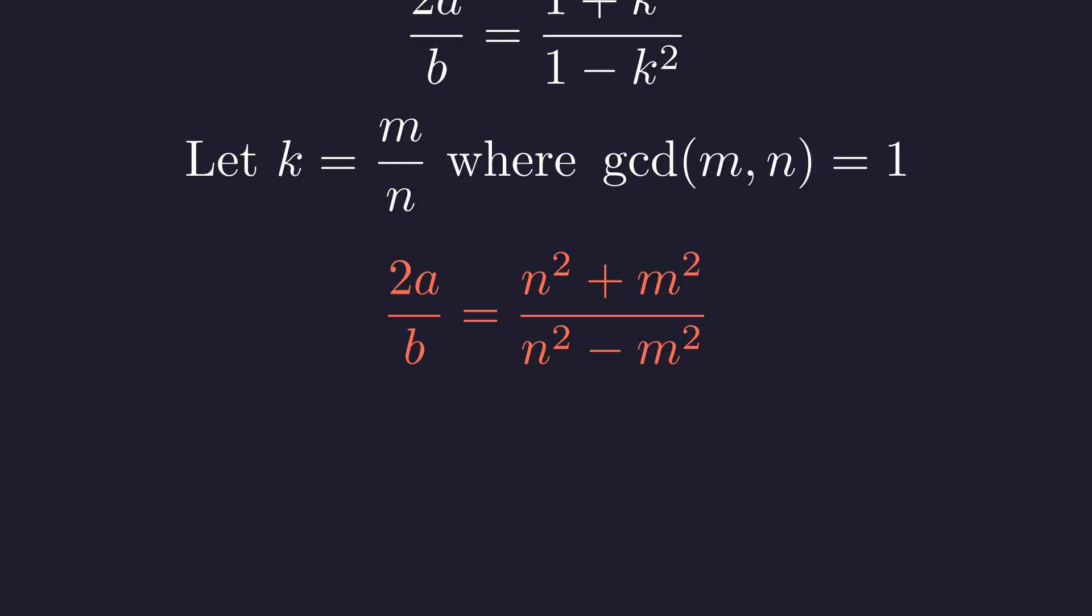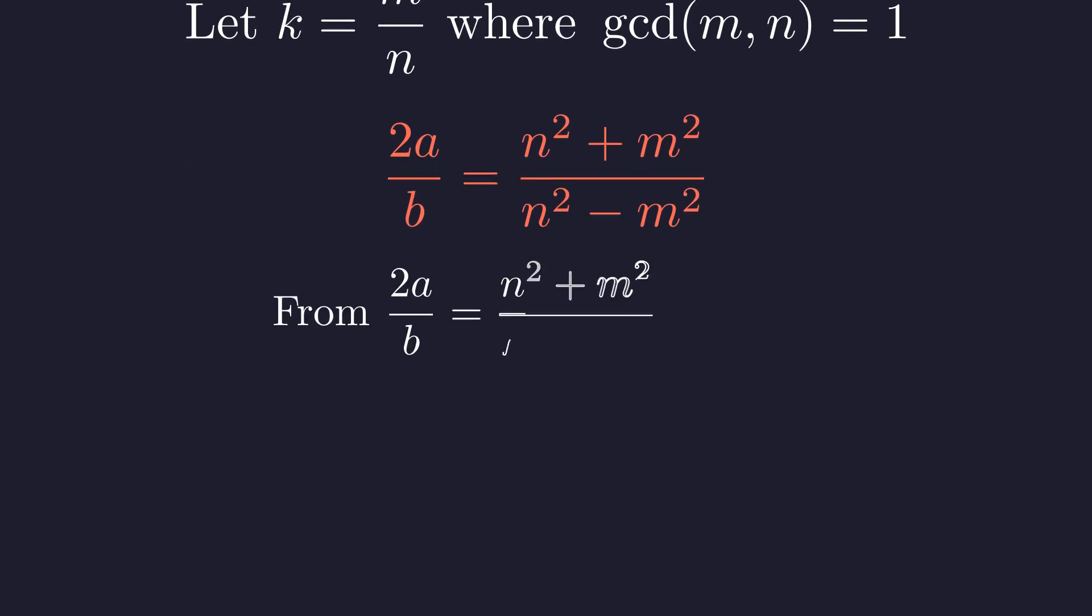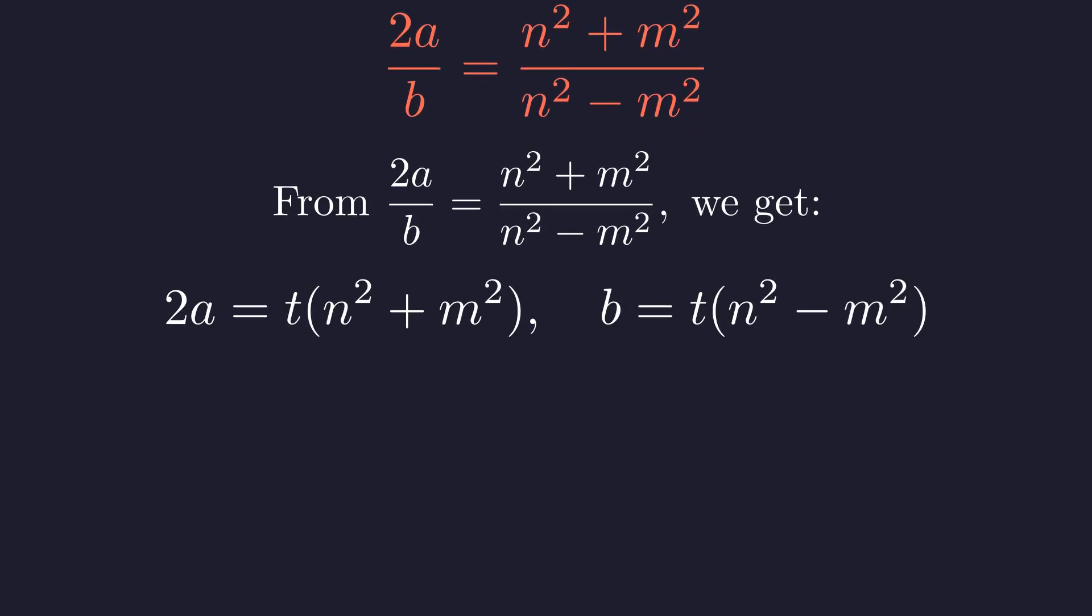For this to give us integer values of a and b, we need specific relationships between m and n. From this ratio, we can express a and b in terms of m and n, where t is some positive integer scaling factor. This parameterizes all possible integer solutions.